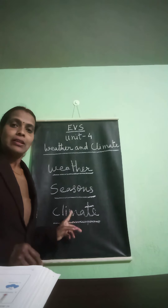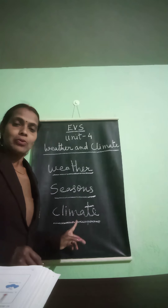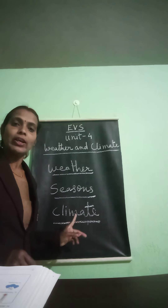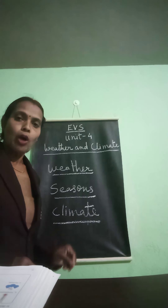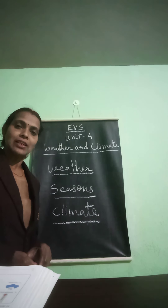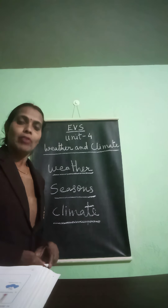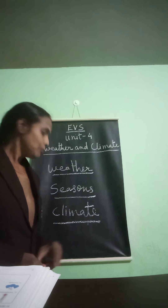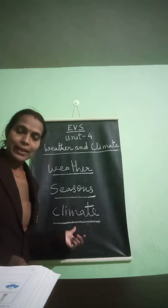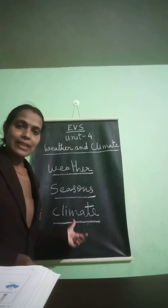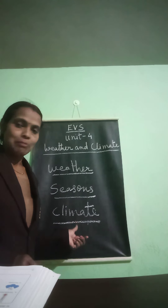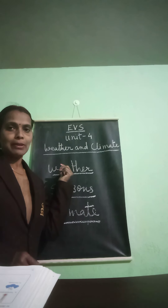Climate — what is climate? The general weather of a place over a long period of time is called climate. Climate is predictable. We can tell you what is the climate of a particular place. But weather is not predictable.